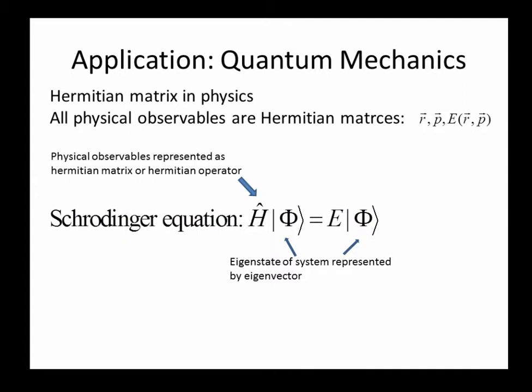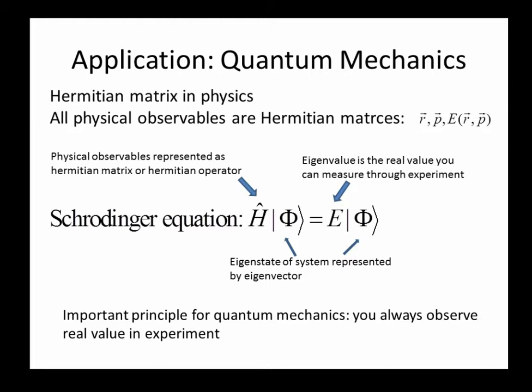For a system represented by a state phi, suppose its Hamiltonian is H hat. Then the Schrödinger equation is H hat times phi equal to E times phi. Phi is the eigenstate of the system and E is the corresponding eigenvalue. This is identical to the characteristic equation in our lecture.